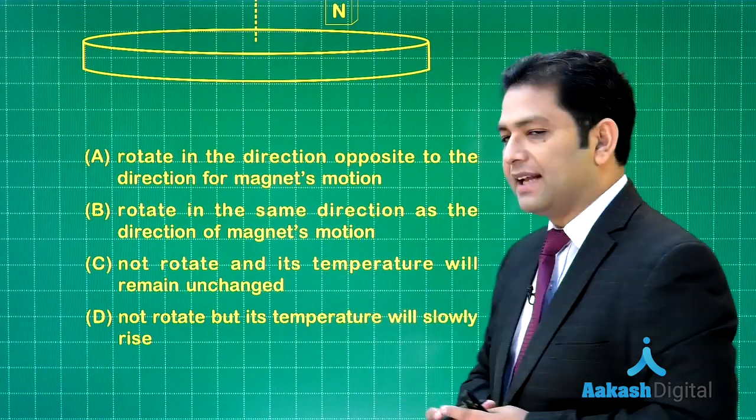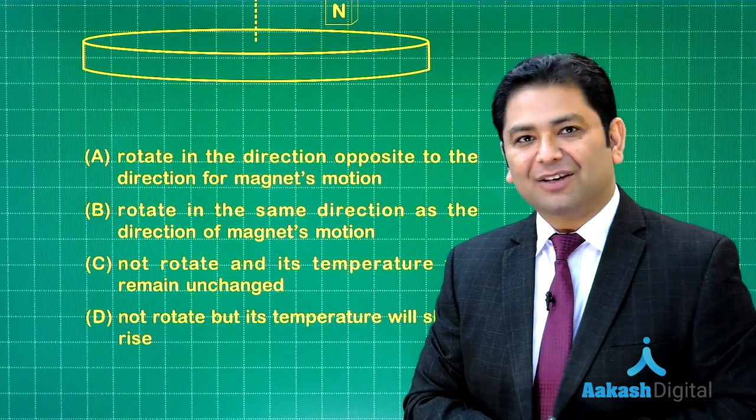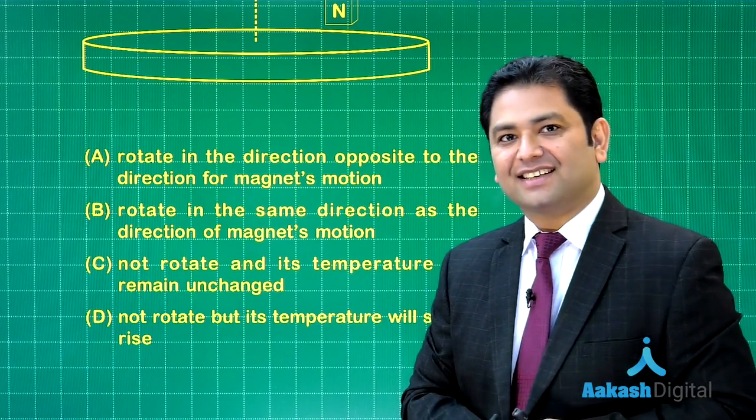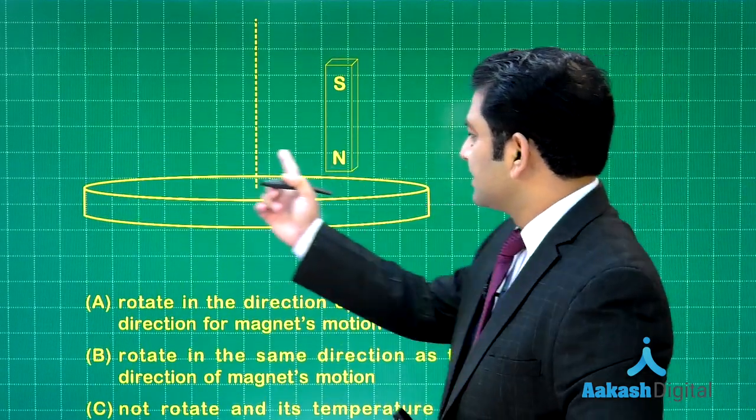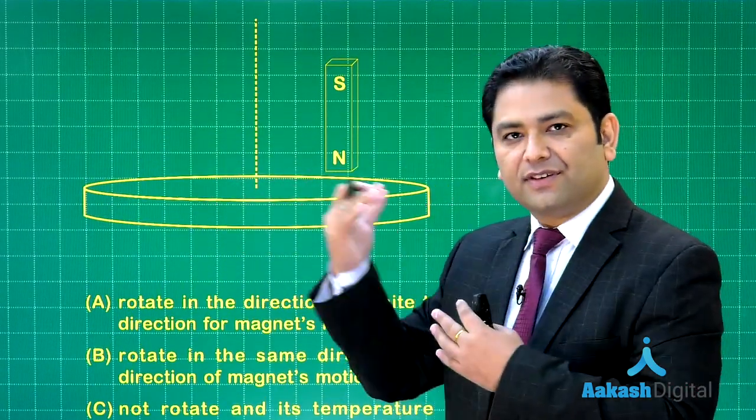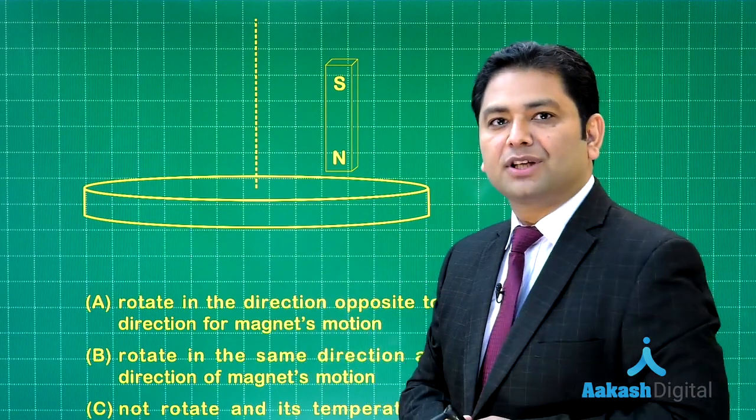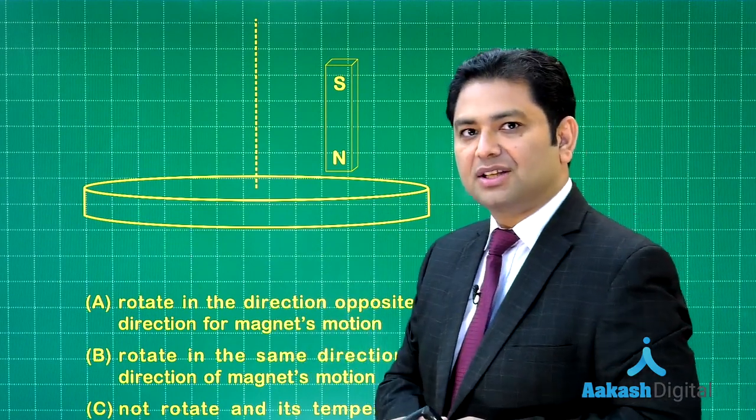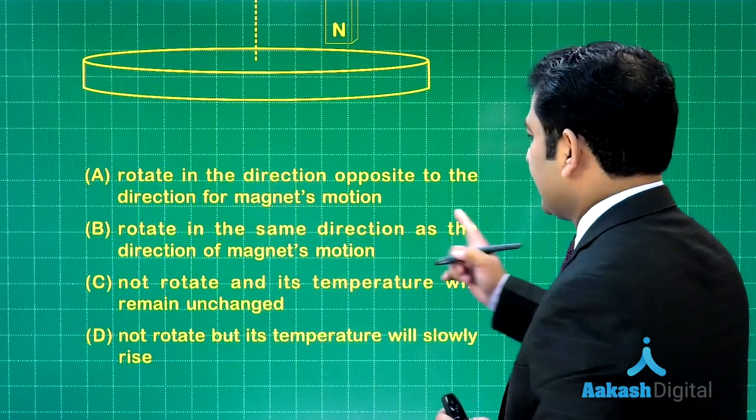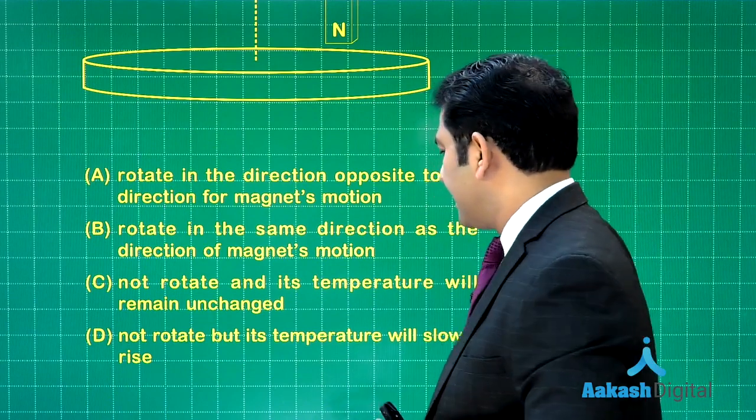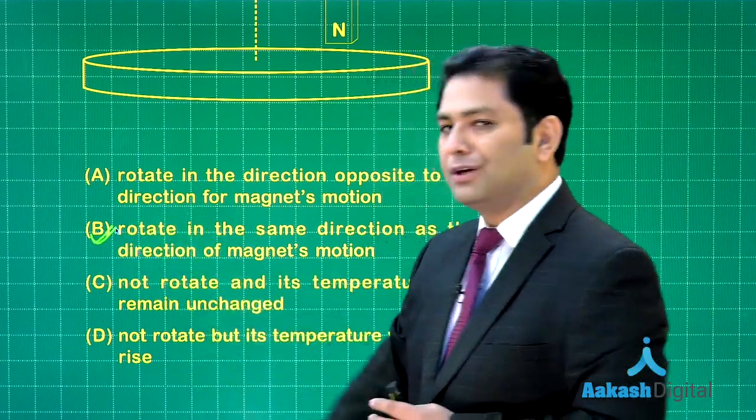Now here you need to understand the concept involved. What is that? That will be the case of eddy current. As it starts rotating, the concept of induction comes into play and eddy current will be there which would oppose the relative motion. So obviously in this given case, the disc will rotate in the same direction as the direction of magnetic motion. So option number B will be the correct one.